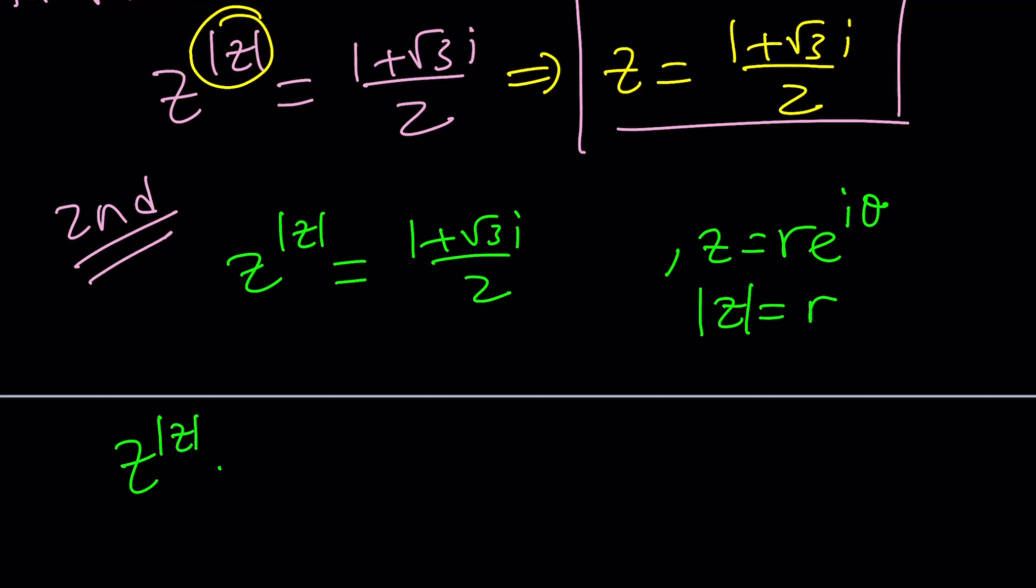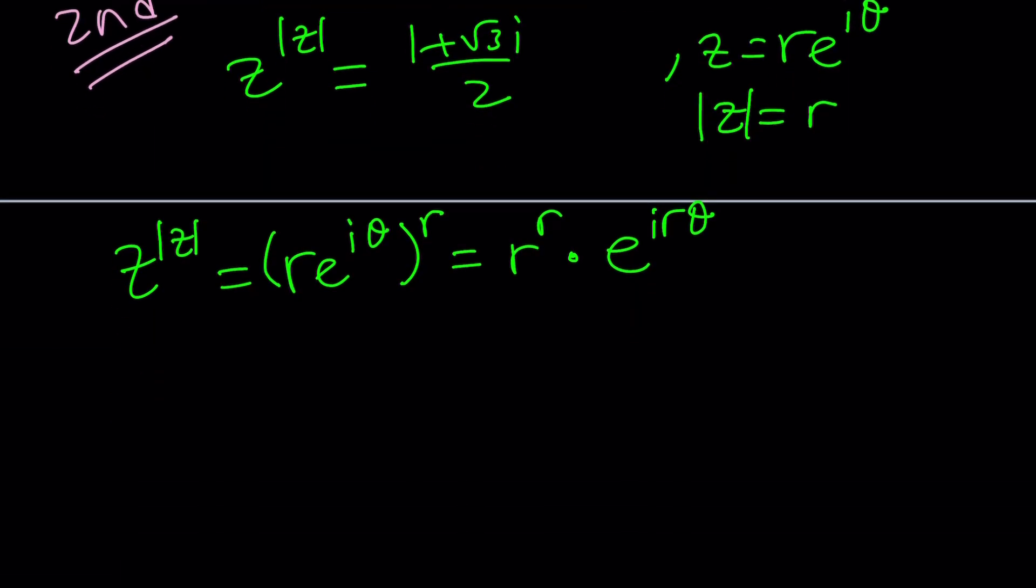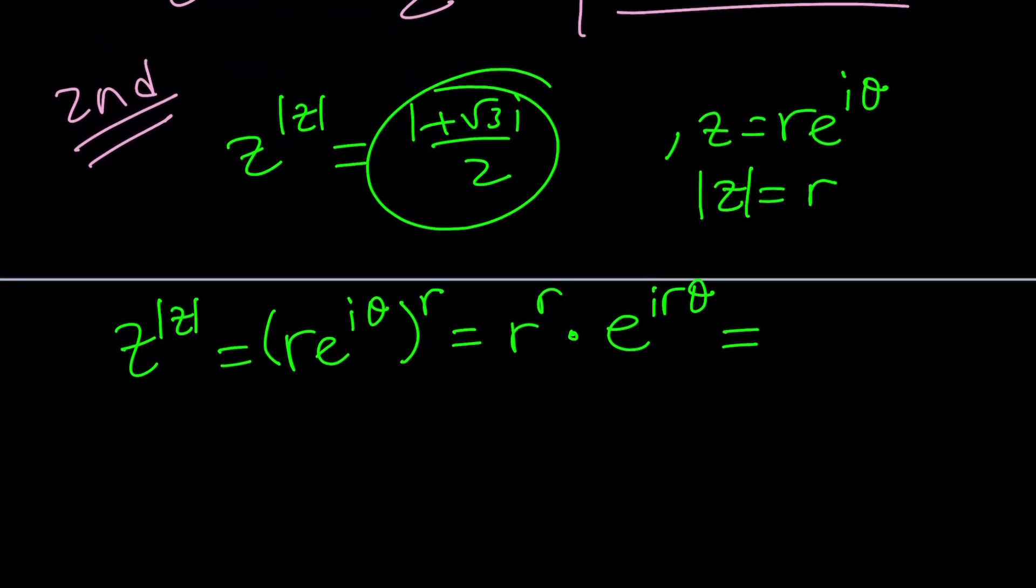Z to the absolute value of z becomes r e to the i theta to the power r, which is r to the r times e to the i r theta. Now this is equal to this number, which is e to the power i times pi over three. Let's go ahead and use the principal value this time.